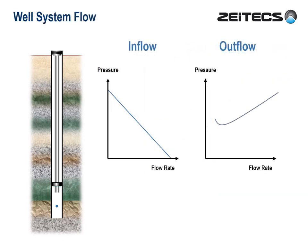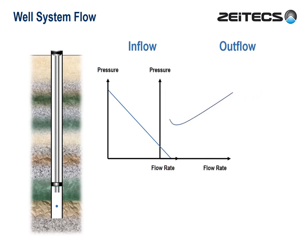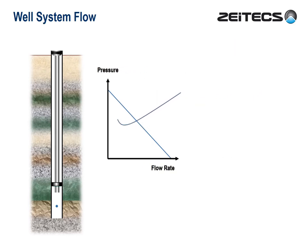So let's summarize. We have inflow and outflow relationships. Both refer to the same point in the well, and both are plotted on the same type of graph. That means we can cross-plot to see how much our total well system will produce. Brilliant! All things considered, our well will produce at this flow rate.